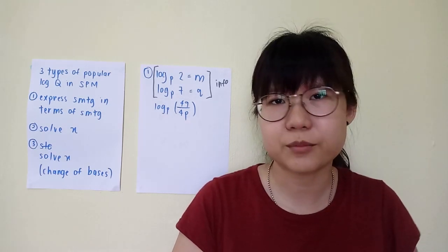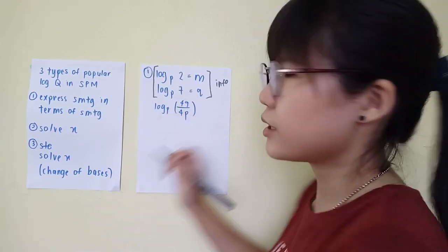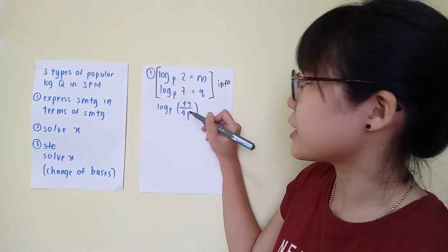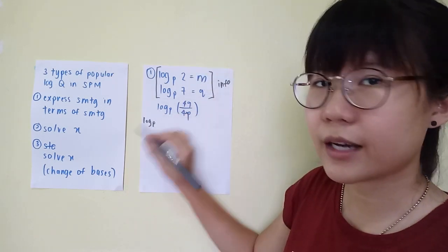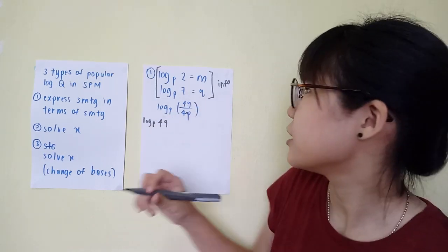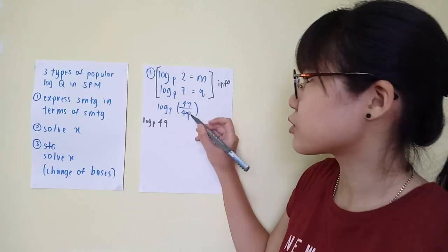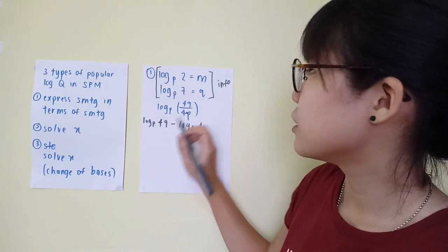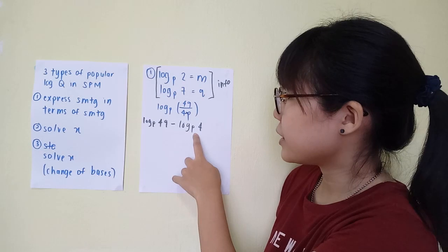We have log_p(49 over 4p), so we have to make it into addition or subtraction only — we have to get rid of the division and multiplication. This is actually 4 times p, so we have log_p(49), and then since 4p is below the division line, it's minus. So it's minus log_p(4p), not plus, because it's below the division line.